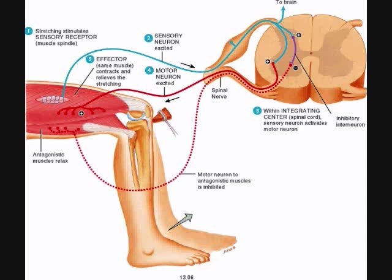All reflexes, whether they're somatic, cranial, or visceral reflexes, are going to involve what's called a reflex arc. A reflex arc is the path that a nerve impulse will have to travel along the nervous system in order to complete the reflex action.